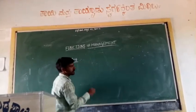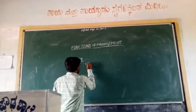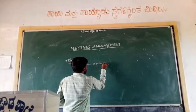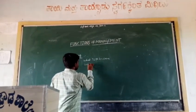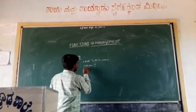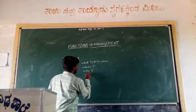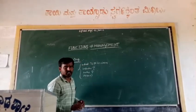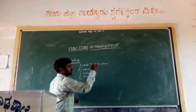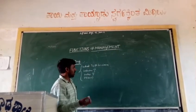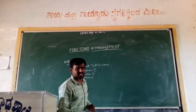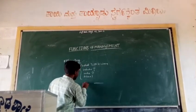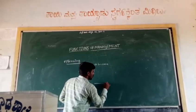We can also understand planning by answering questions like: What is to be done? Where is it to be done? Who has to do it? And how is it to be done? By finding answers to these questions, we can achieve organizational goals. Planning is a concept that bridges the gap between where we are and where we want to go.